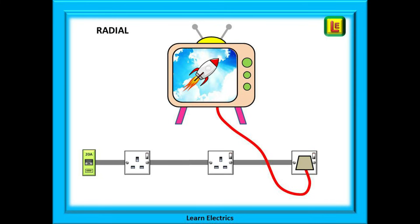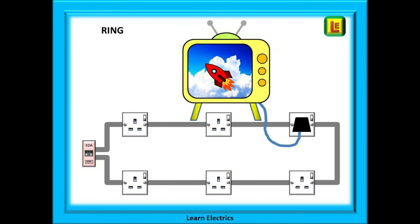Look at this slide of a radial circuit. The television is plugged in and everything is working correctly. Nothing is wrong with this radial circuit. And here is the next room, wired as a ring circuit and another television. Everything is working correctly, no problems.